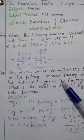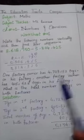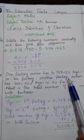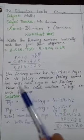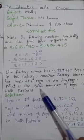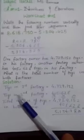Question number 5 is a word problem. One factory owner has this number of toys, and another factory owner has this number of toys. We have to find the total number of toys in both factories.